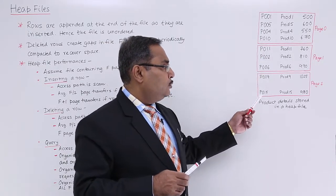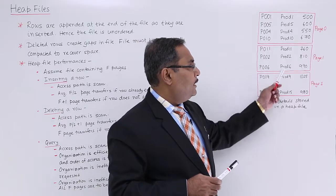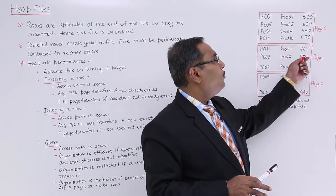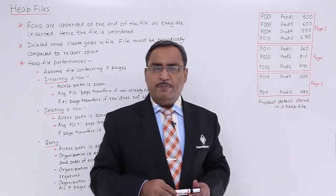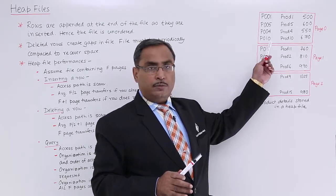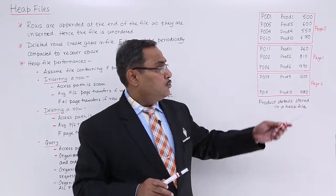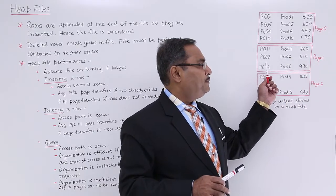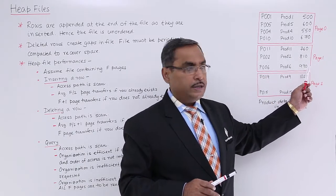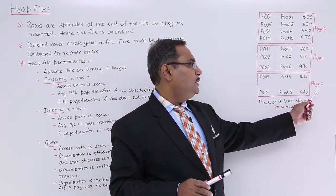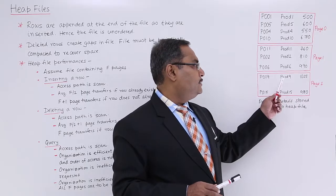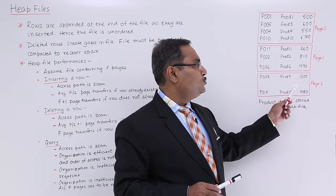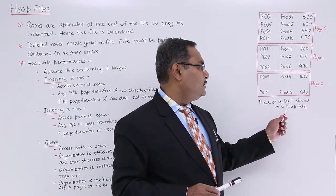Here you can see the product ID, which is unique, the product name, and the product price — written arbitrarily. In page 0 we have 4 products. Each page has the same size and each record is stored in one of the pages. Page 1 leaves one blank space, containing 3 records. Page 2 has 2 records with blank spaces for 2 more. So that is page 0 to page 2 — product details stored in a heap file.